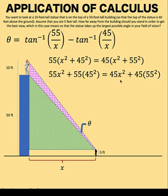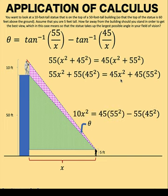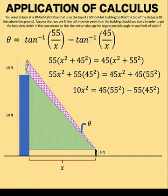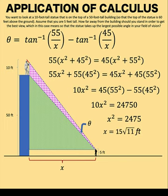55x squared minus 45x squared is 10x squared. And subtracting 55 times 45 squared to both sides of the equation, here is the result. And simplifying further, we arrive at x squared equals 2475 or x is equal to plus or minus 15 square root of 11. But since we know that x is positive, then we just take the positive 15 square root of 11 as the value of x. This is now our critical point.